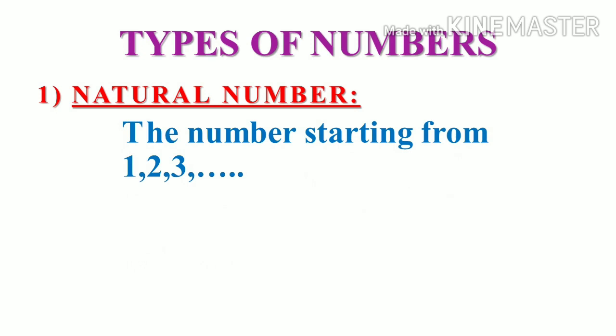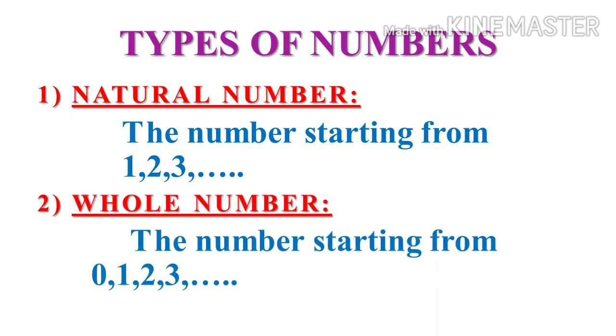Now, if we add zero in the beginning, then what it is? Zero, one, two, three are whole numbers.